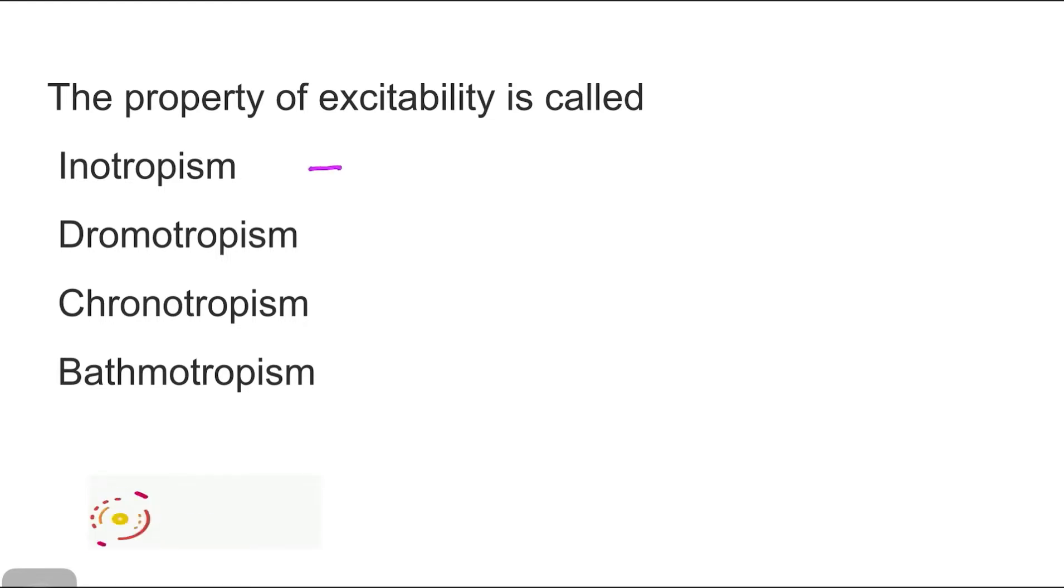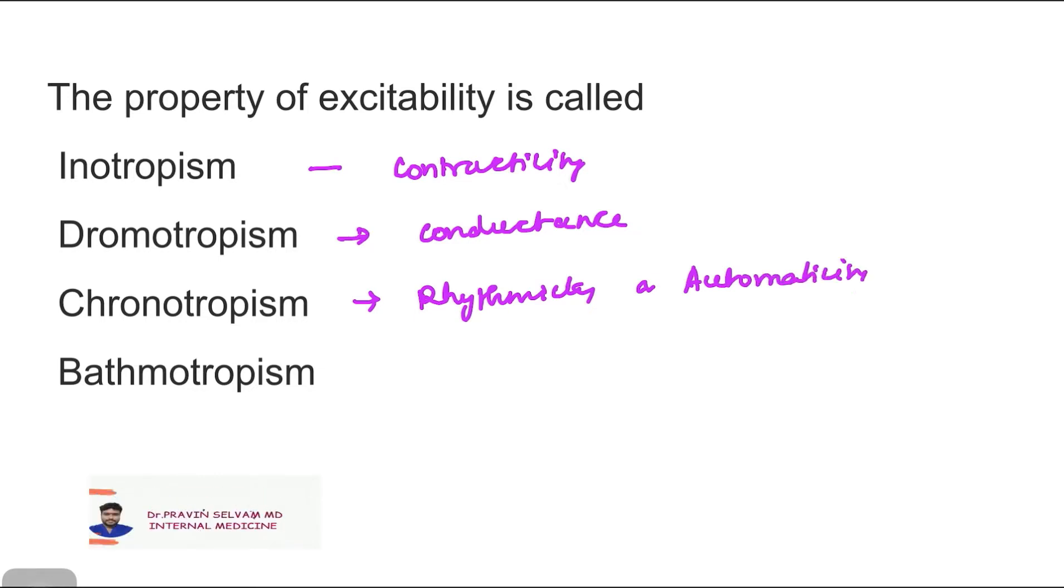So inotropism is the contractility. Dromotropism is the conductance. Chronotropism is rhythmicity or automaticity. Bathmotropism, it is excitability.